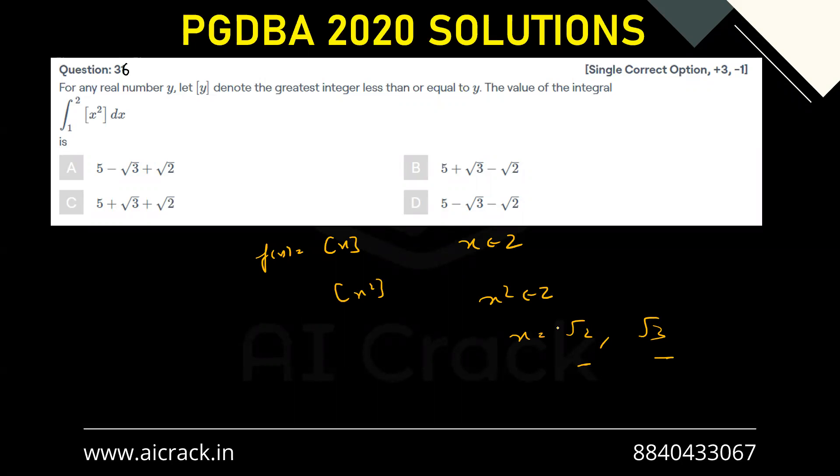So let's try to do that. Our integral would become: the split would become 1 to √2 plus √2 to √3 plus √3 to 2, dx. We'll have some value over here.